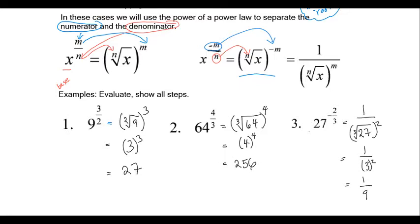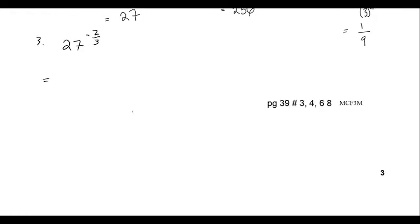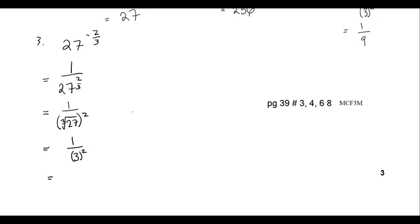For the next part, we'll try this problem again but with two steps. We have 27 to the negative two-thirds, so because of the minus sign, we write 1 over 27 to the two-thirds to remove the negative exponent. Now that we have 27 to the two-thirds on the denominator, we radicalize it: 1 over the third root of 27 raised to the 2. The third root of 27 is 3, and 3 squared gives us 1 over 9.